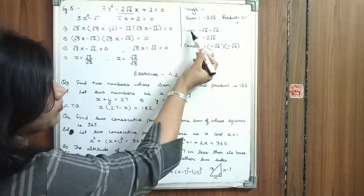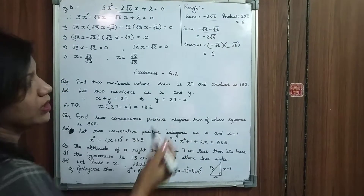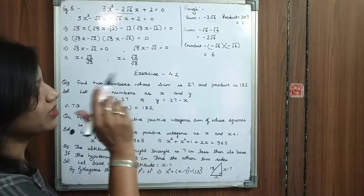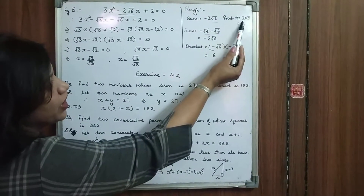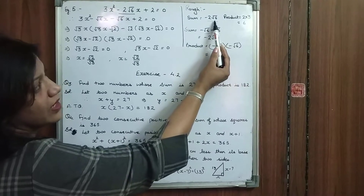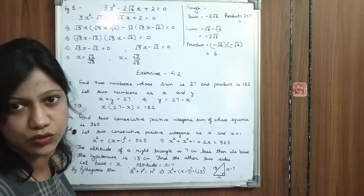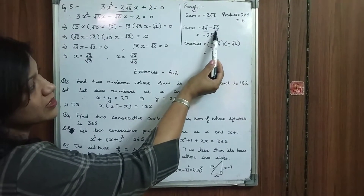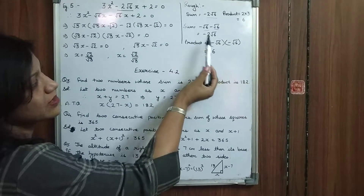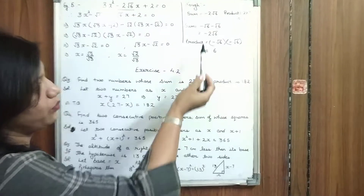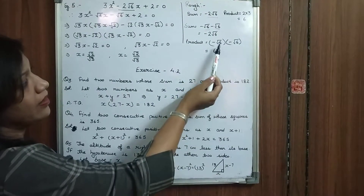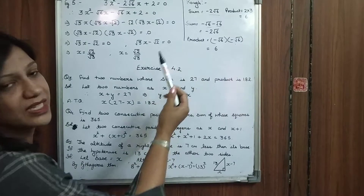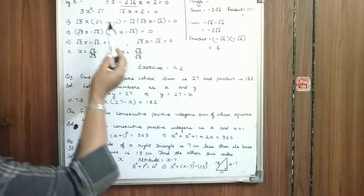We will take the two numbers as minus √6 and minus √6. What is the reason behind that? If you take 2 and 3, they can never be equal to minus 2√6, and we know very well the sum of √6 and √6 is 2√6. That's why we have taken it this way, and their product also: minus √6 into minus √6 is 6.